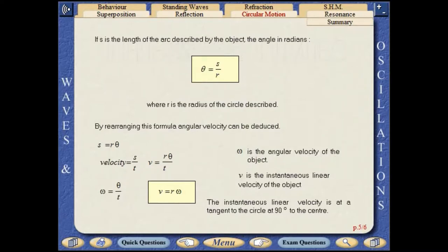If s is the length of the arc described by the object, the angle in radians is given as theta equals s over r, where r is the radius of the circle described.